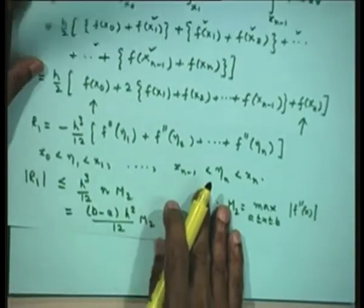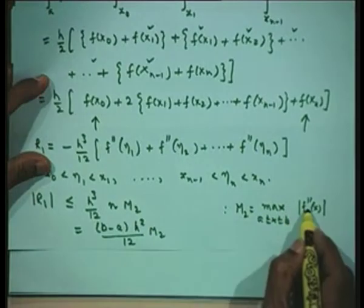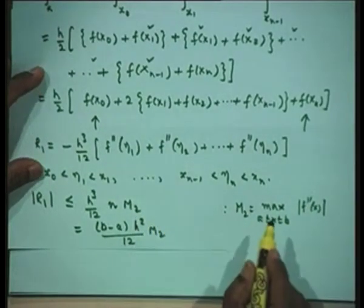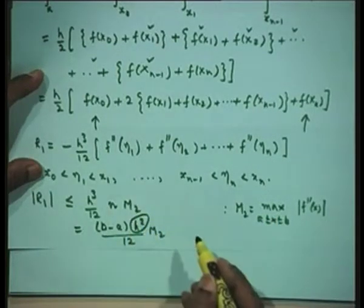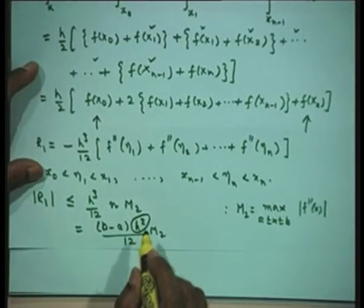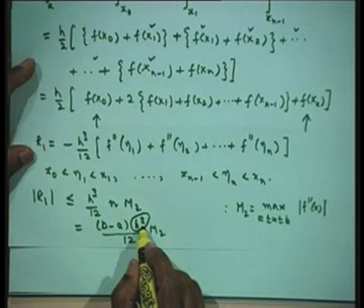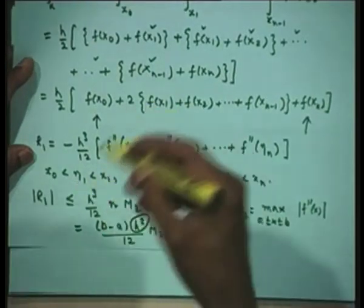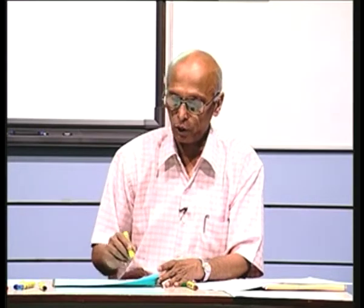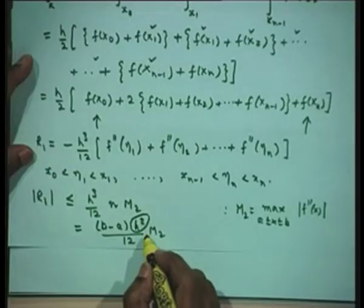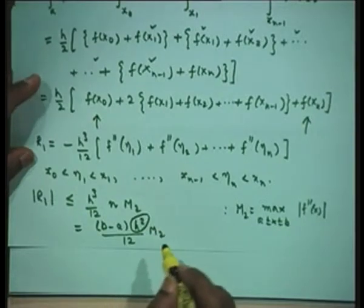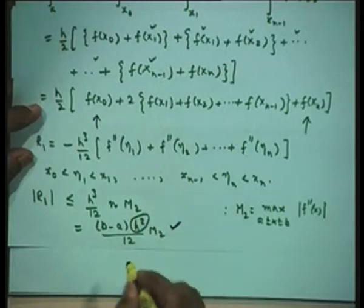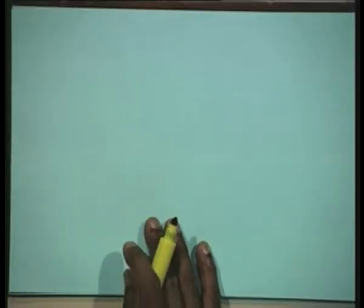In practical computation the order of the formula is still one — it integrates polynomials of degree one exactly — but the error behaves like an order h² expression when h is small. This is the expression we will use later when applying composite rules to get better results.